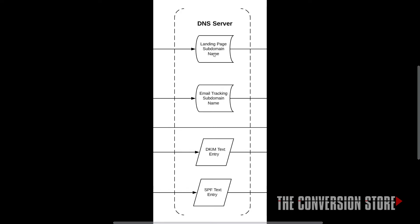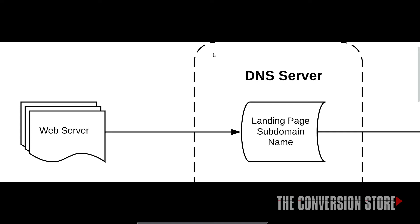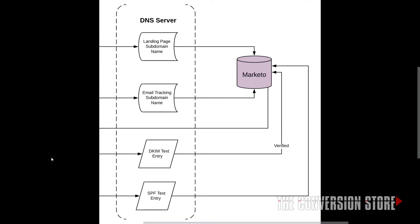If you're looking for a landing page, the DNS server gives you the address of the web server — usually your homepage, but it can also be Marketo's landing page server. For Marketo, there are four different types of DNS entries you need to run Marketo for email and landing pages. The email tracking subdomain entry handles all the links in your email, and the two entries — DKIM and SPF — are settings you configure for email deliverability.